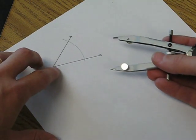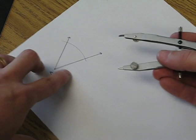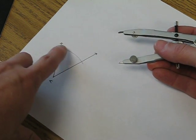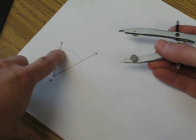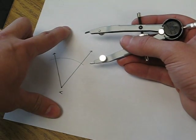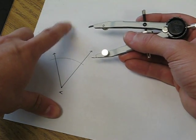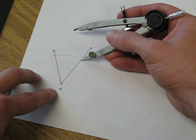The next step would be to, again with any radius, mark two more arcs using those points of intersection on the side. We want our arcs to pass and cut each other here in the interior of the angle.